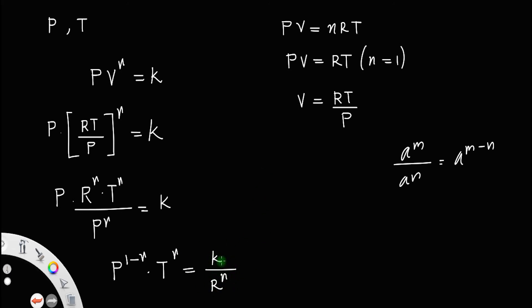Now look at the right side. K is already a constant. R is a universal gas constant. So R to the power the heat capacity ratio is again a constant. Since both of this R and gamma are constant,